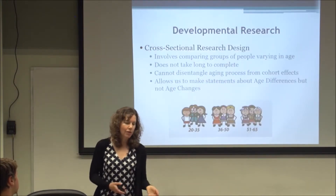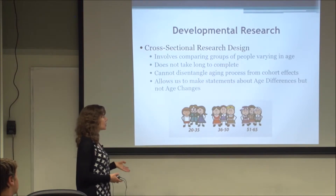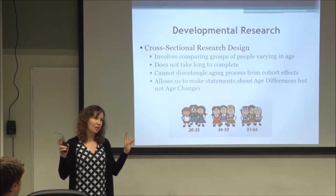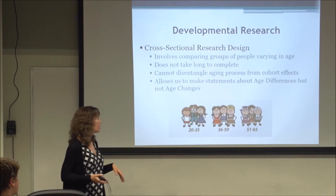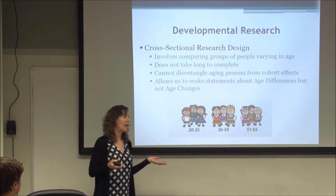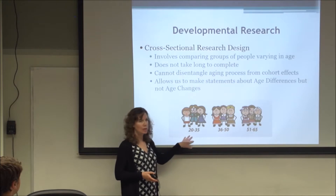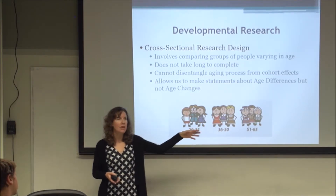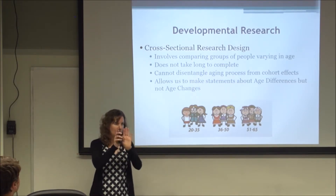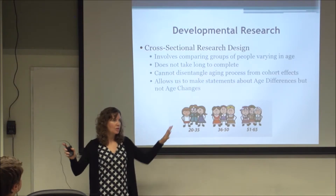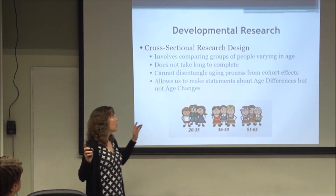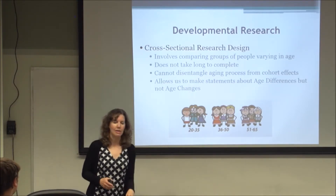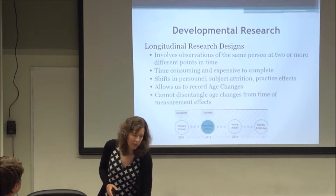Cross-sectional designs are great because you can do them very quickly, as long as you can get your participants. You would take a survey and give it to groups of people aged 20–35, 35–50, 51–65, and 70–85, all at the same time today, finding people of all those different ages. That's what we call cross-sectional. Most of our aging research is done this way because it's easier than the other type of design, which is longitudinal.